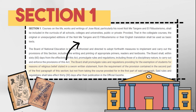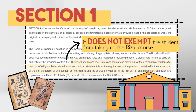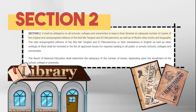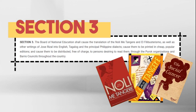Take note that the exemption does not exempt the student from taking up the Rizal course. Moving on to Section 2, all schools, colleges, and universities are required to keep in their libraries the original and unexpurgated editions of Noli Me Tangere and El Filibusterismo, as well as Rizal's other works and biography. Section 3 of the law mandates that Noli Me Tangere and El Filibusterismo as well as the other writings of Jose Rizal shall be translated into English, Tagalog, and principal Philippine dialects. They shall also be printed in cheap and popular editions and distributed free of charge through the Purok organizations and Barrio Councils throughout the country.